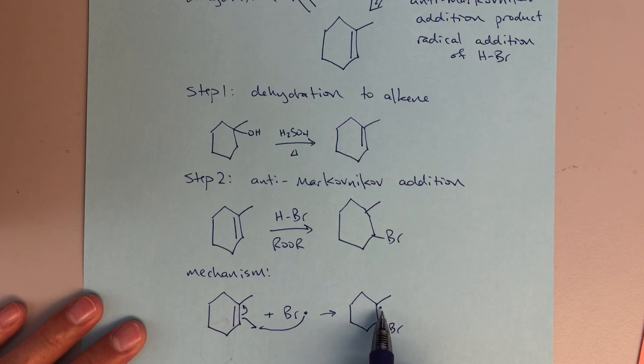So this is my more stable intermediate with the radical on the more substituted carbon. I've got the bromine down here.